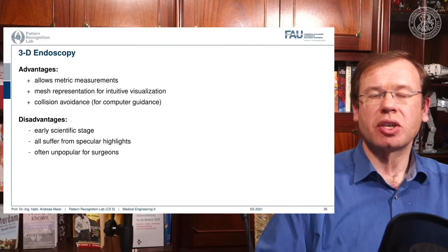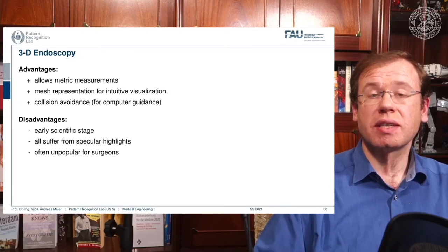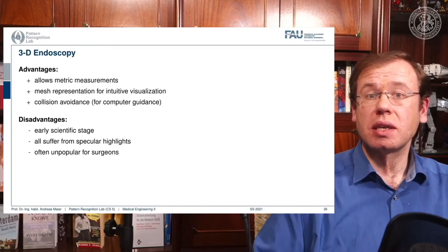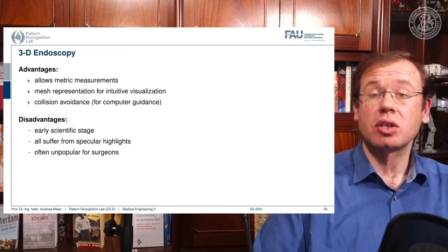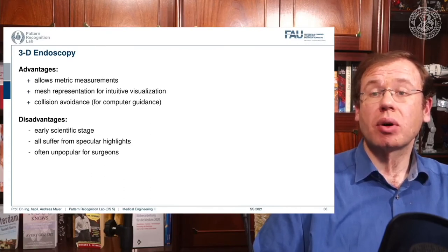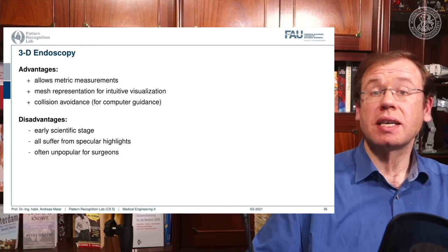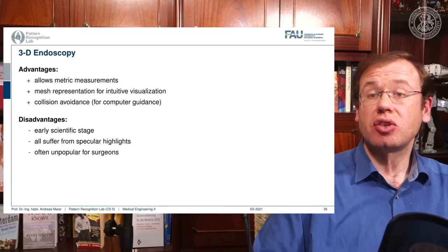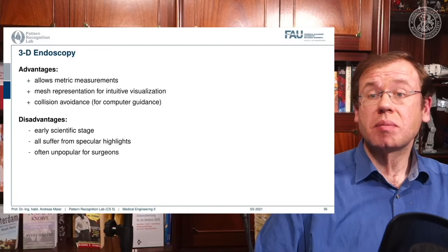An advantage of the 3D endoscope is that it allows metric measurements — because it is calibrated, you can measure distances in millimeters. You also get a mesh representation of the field of view, enabling intuitive visualization where you can change your viewpoint artificially to locations that are physically not accessible. Because the data is metric, you can also avoid collisions, which is very important for computer guidance, especially in keyhole surgeries like brain operations where you don't want to damage certain areas.